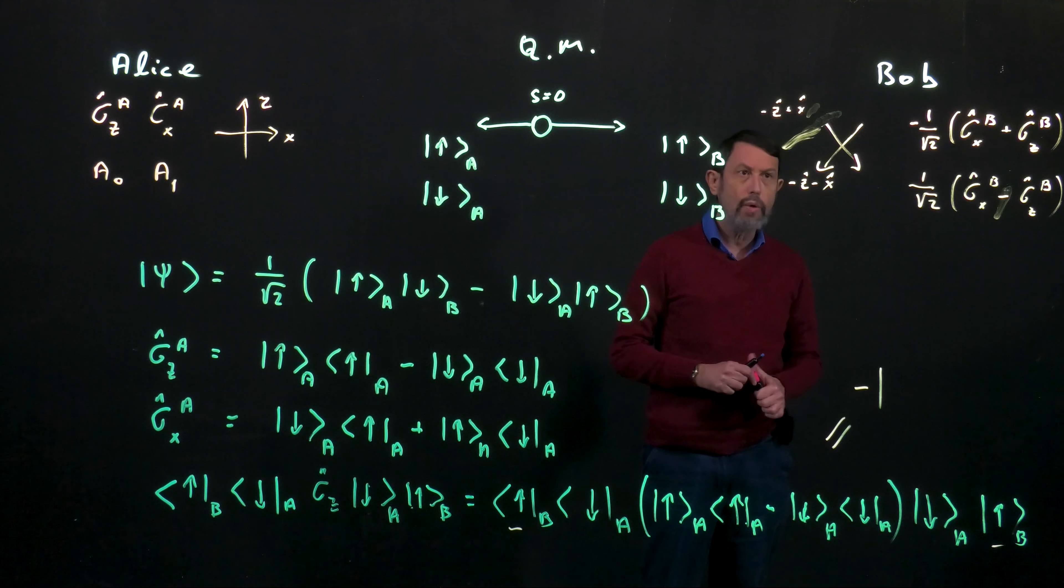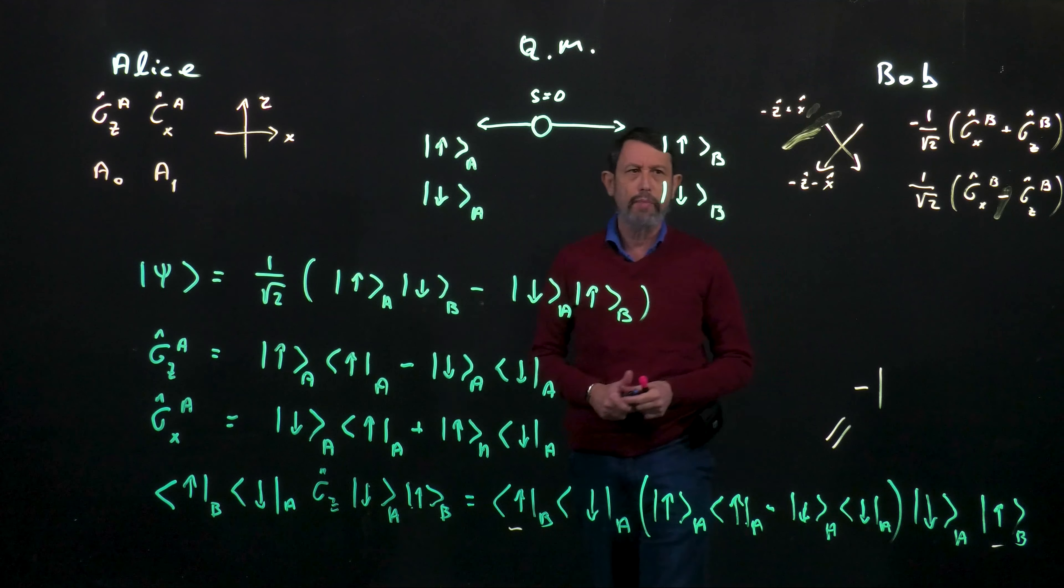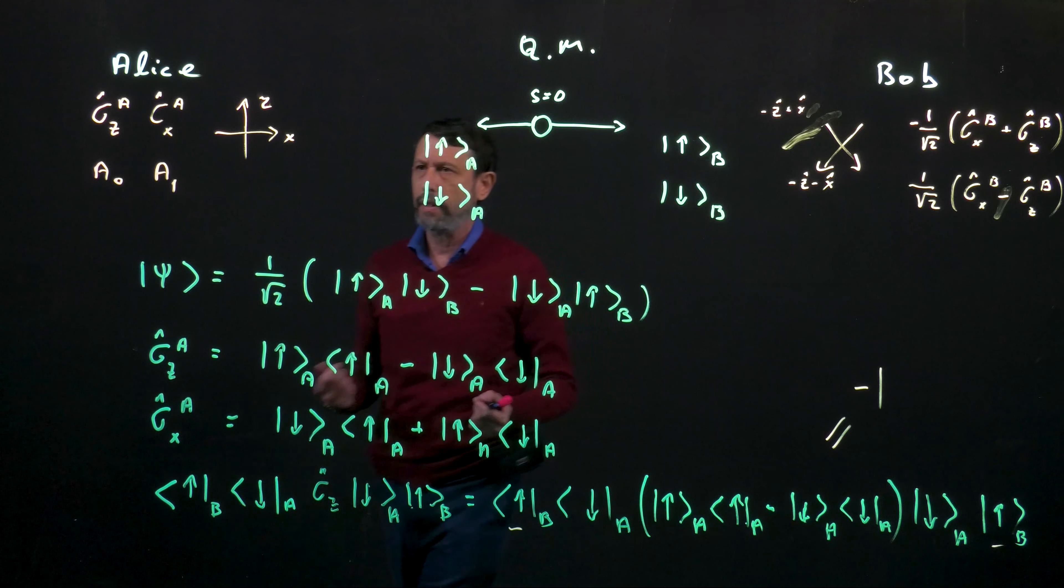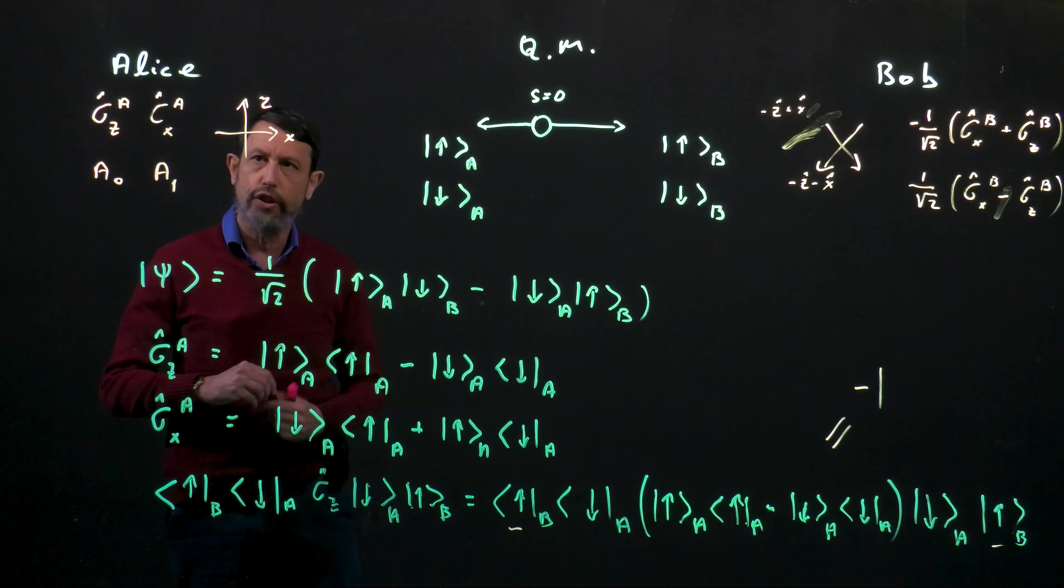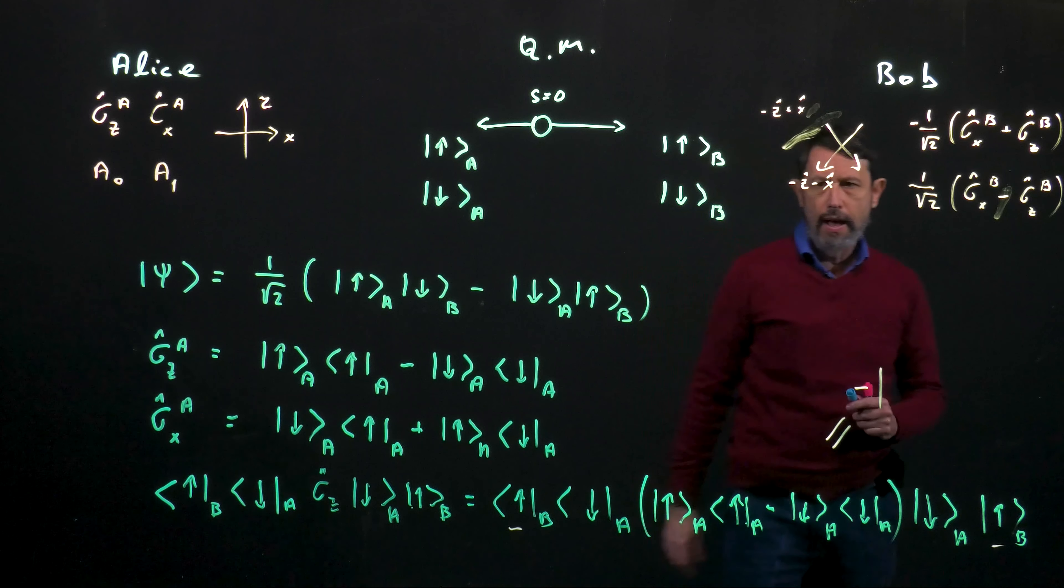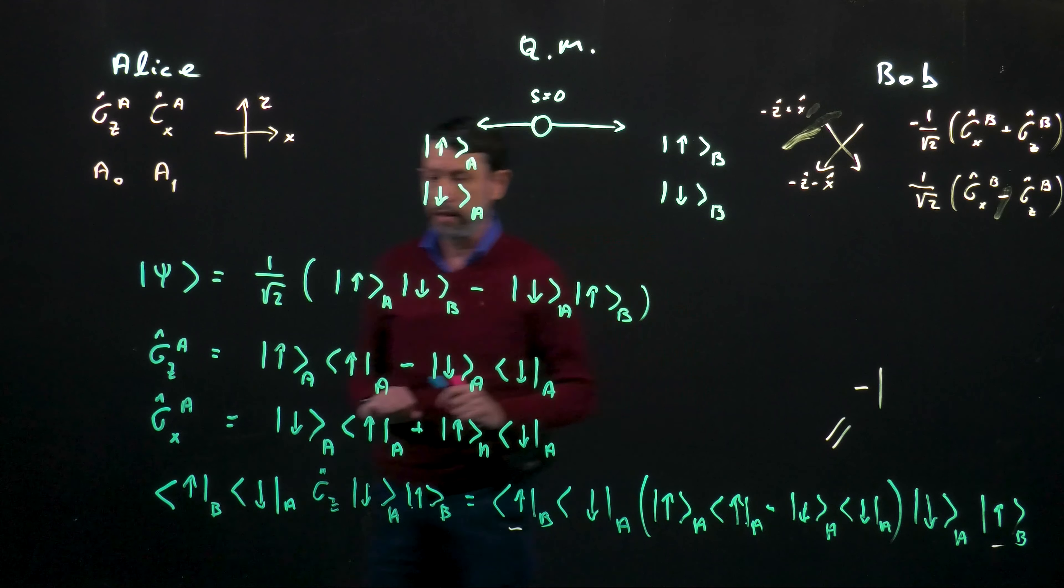Okay, so now we know actually to perform any calculations that we're interested in the observation of Alice and Bob and the correlation between them.